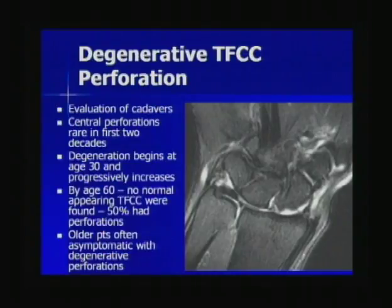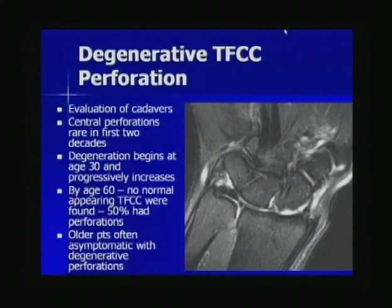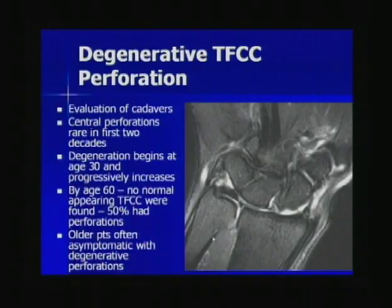Degenerative TFCC perforations are very common, particularly in elderly patients. A cadaveric study found that degeneration begins at age 30 and progressively increases; by age 60, no normal-appearing TFCCs were found and about 50% actually had perforations. It's important to remember that in older patients, these degenerative perforations are often asymptomatic — which is why we prefer the term 'perforation' over 'tear' in these cases.